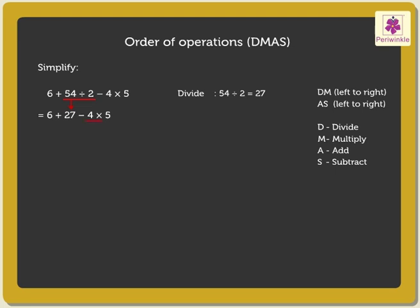Next, we multiply the numbers. Multiply 4 into 5, which is equal to 20. So, we get 6 plus 27 minus 20.